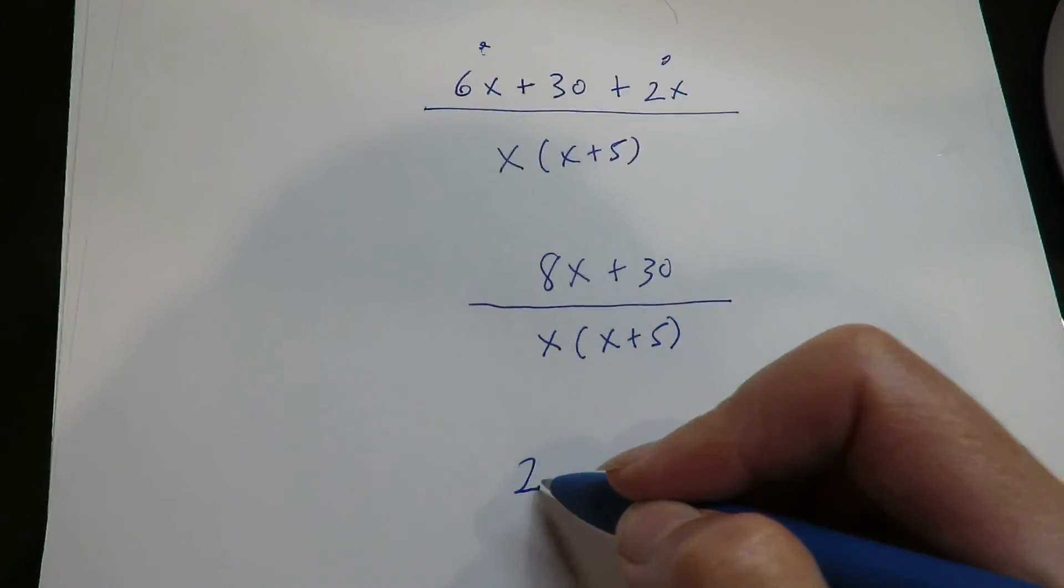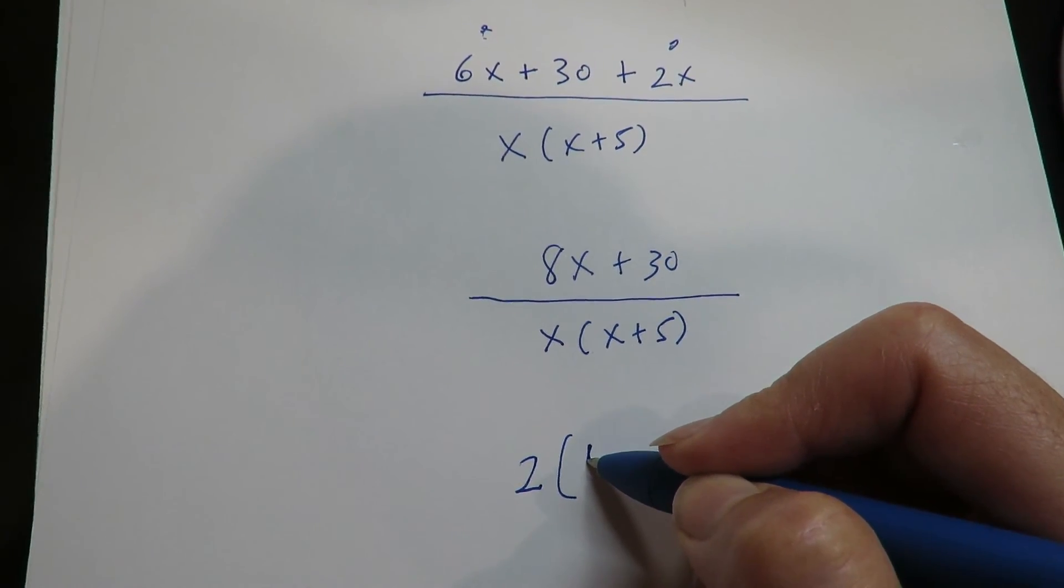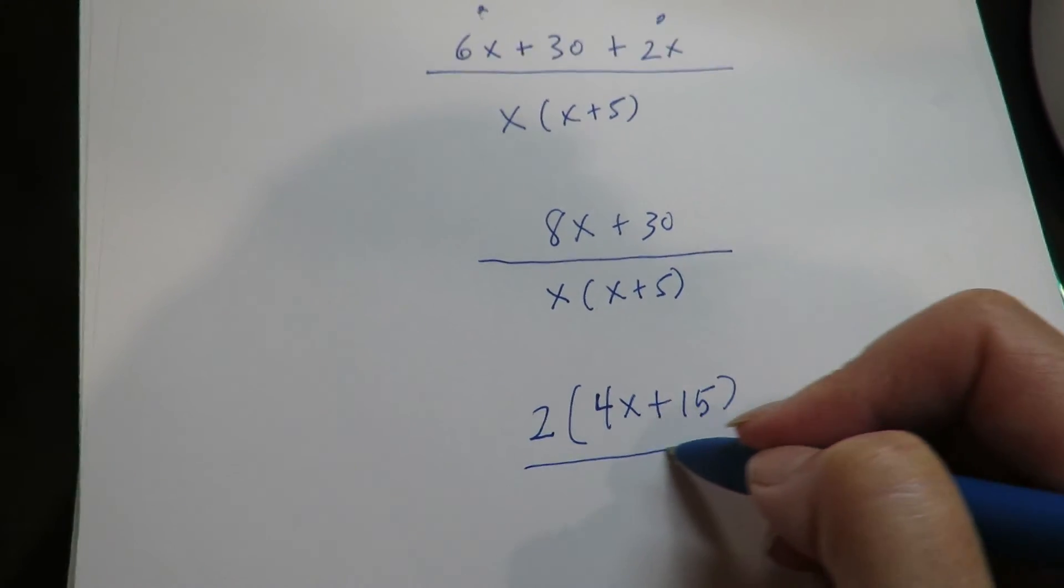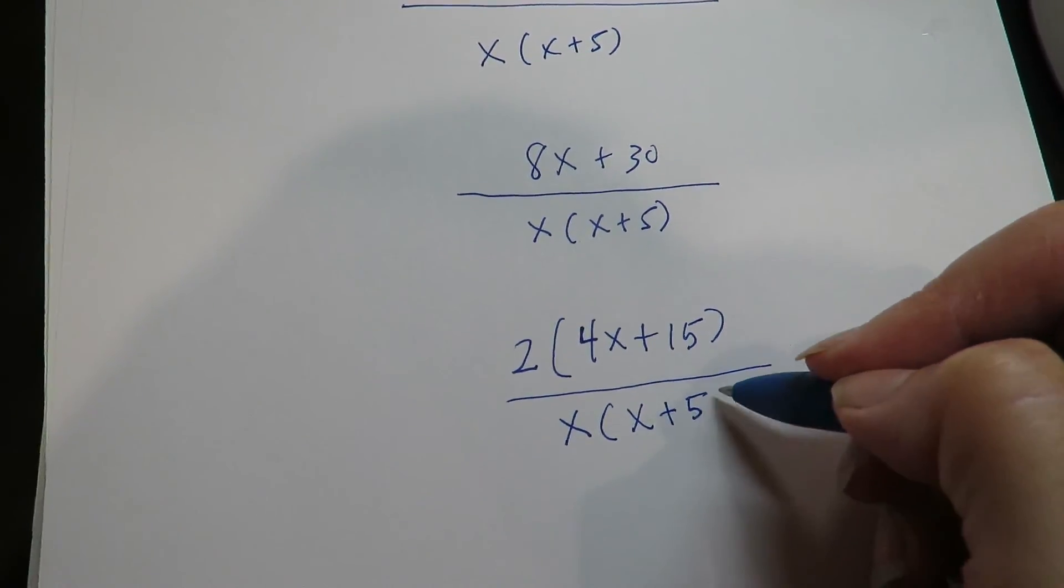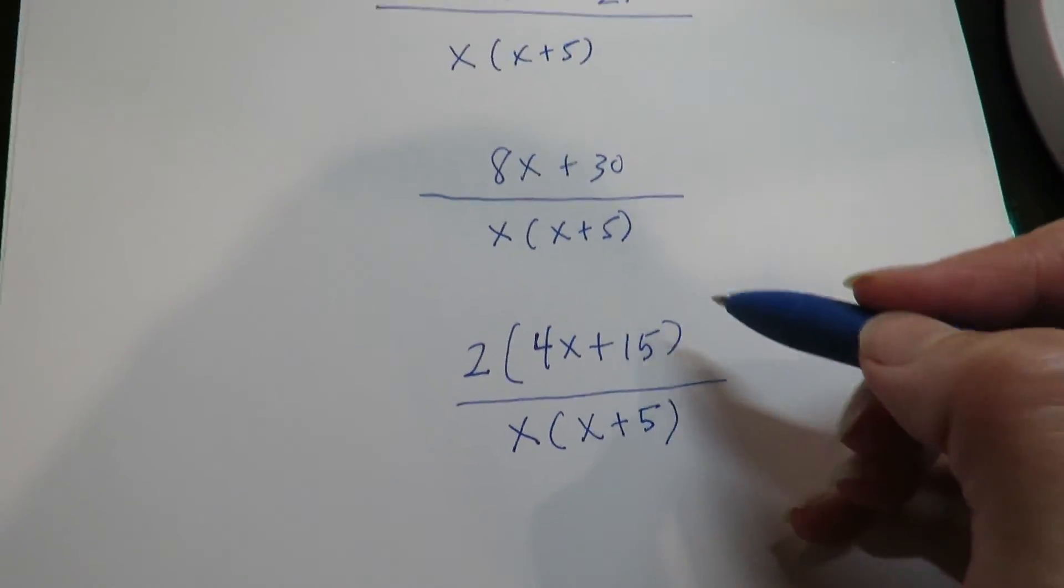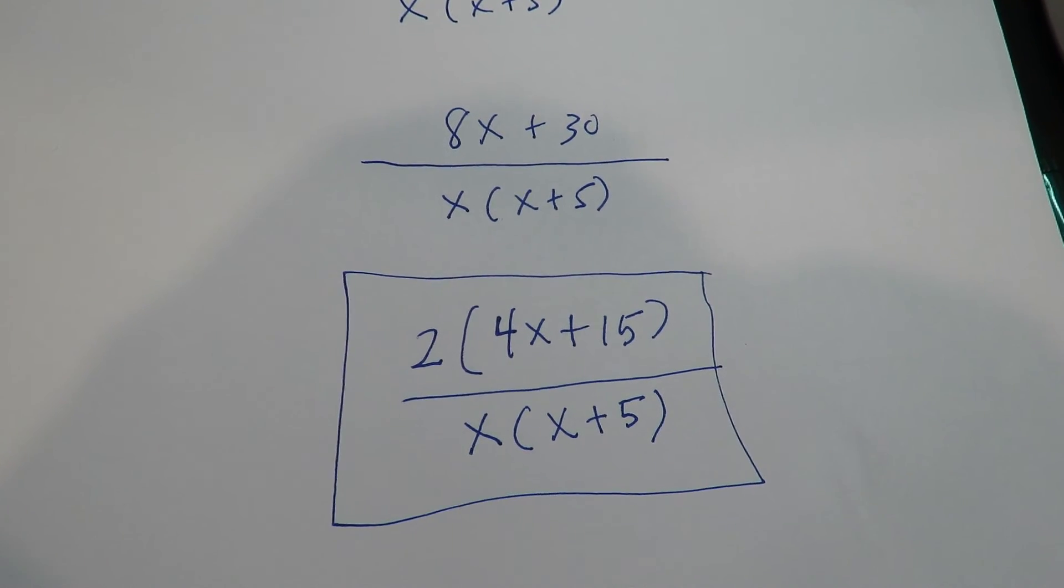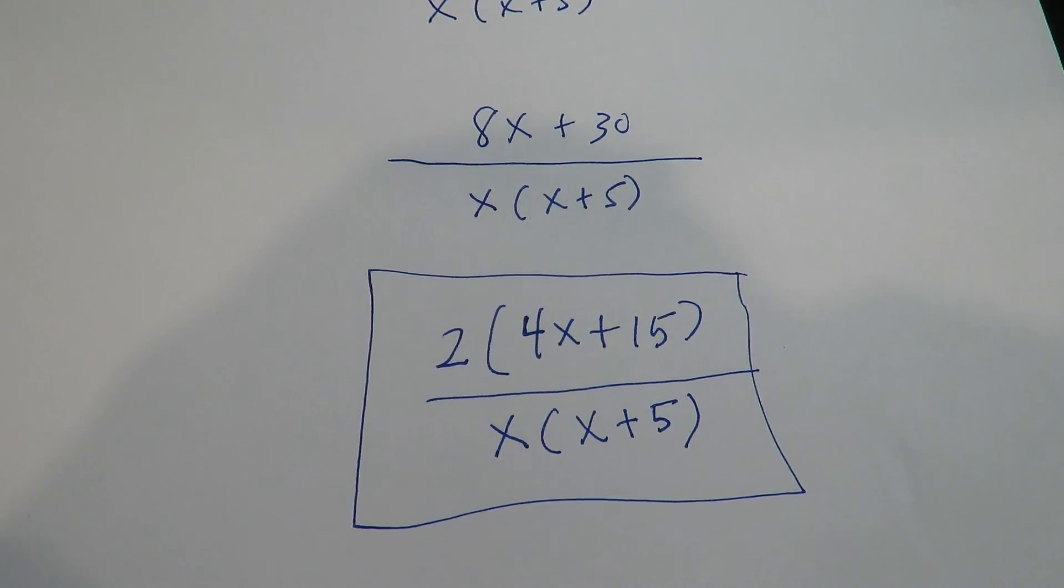I'm just going to get you in the habit of factoring out anything you can, because some of these will reduce at the very end. And you won't catch that if you don't do it. So this is actually a better answer than the previous one, but the previous one isn't necessarily wrong. That's the final answer to the first one.